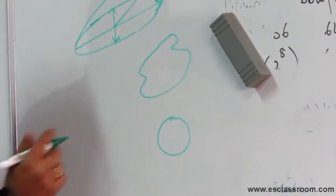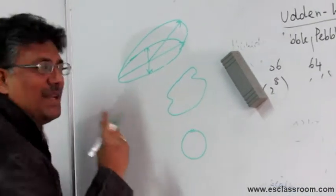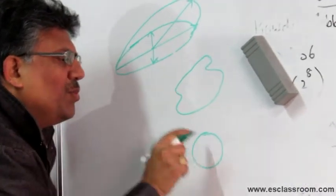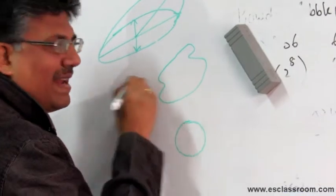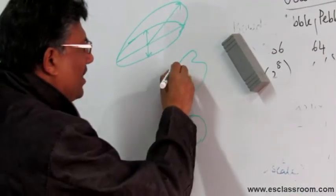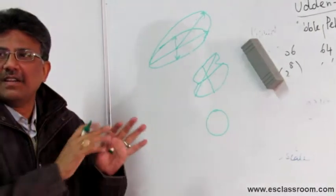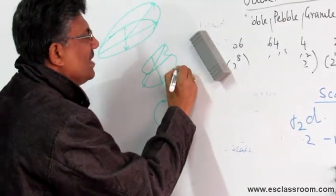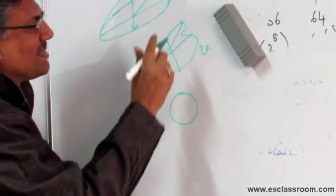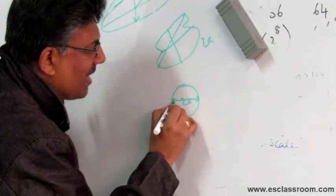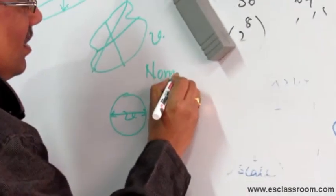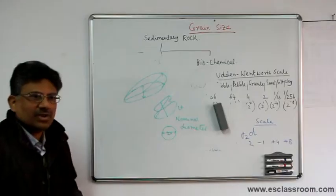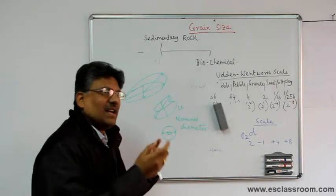For an irregular grain we measure the nominal diameter. The nominal diameter is the diameter of a sphere that has the same volume as the grain. Since an irregular grain has many possible diameters depending on direction, instead we take the grain's volume V, imagine a sphere of that same volume V, and the diameter of that sphere is the nominal diameter of the grain. For a sand grain, this is ultimately what we measure.